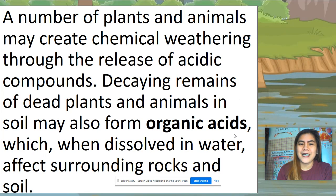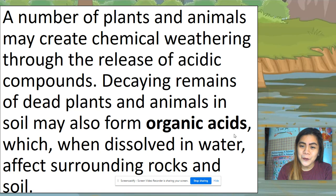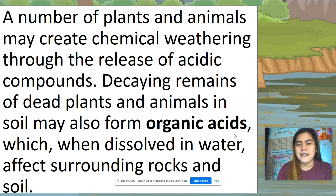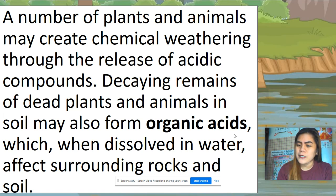The last process is organic acids. A number of plants and animals may cause chemical weathering through the release of acidic compounds. Decaying remains of dead plants and animals may also form organic acids, which when dissolved in water affect the surrounding rocks and soil.